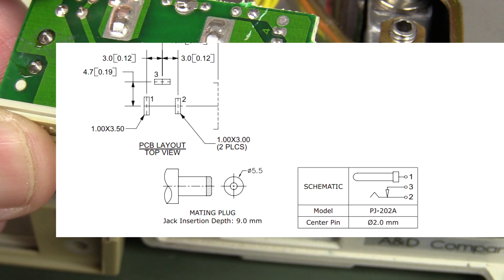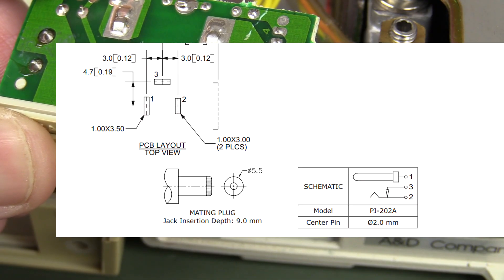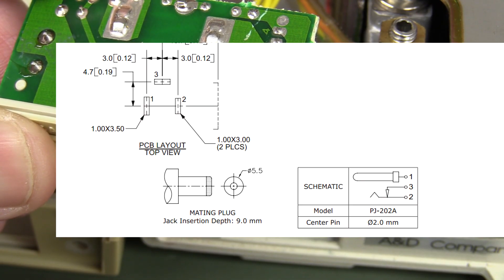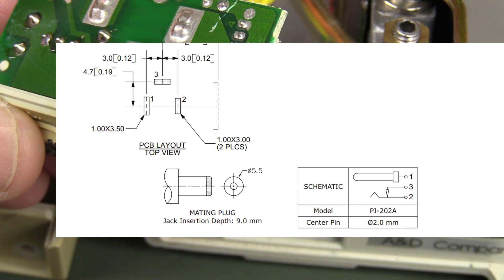So when you insert the jack, it can make or break that internal switch. Pin 3 is actually the switch contact. You can just ignore that and not use it, or you can short out pins 2 and 3 if you're just not using the switch. You can just use pins 1 and 2 or pins 1 and 2 and 3 connected.